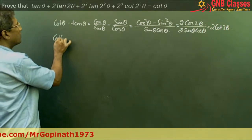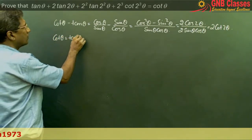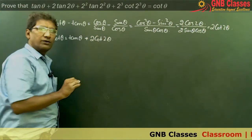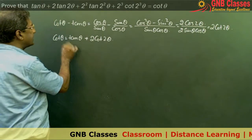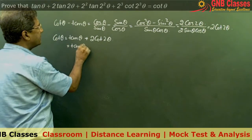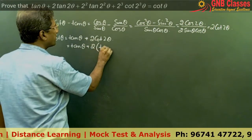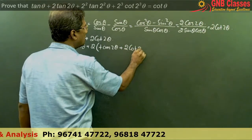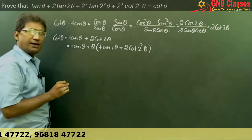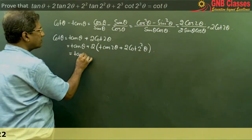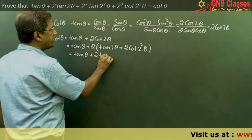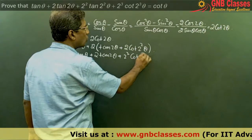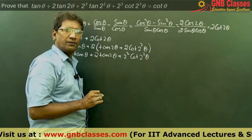We get cot θ equals tan θ plus 2 cot 2θ. Now cot 2θ, similarly we can prove that this is nothing but tan 2θ plus 2 cot 2²θ. So the full expression becomes tan θ plus 2 tan 2θ plus 2² cot 2²θ.